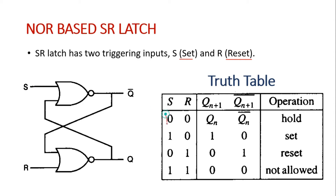Let's consider our first input: S is equal to 0 and R is equal to 0. Now, Q and Q bar depend upon the previous operation. Whatever the value of Q and Q bar was in the previous operation will be maintained. Let us assume that in the previous operation we have Q is 0 and Q bar is 1. So Q bar is connected to the first NOR gate, therefore the input is 1.